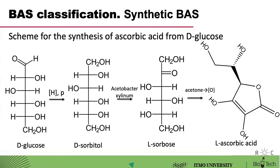Glucose is catalytically hydrogenated with pressurized hydrogen to give D-sorbitol. L-sorbose is obtained from the latter by biological oxidation by the action of Acetobacter xylinum. Treatment with acetone gives 2,3:4,6-diisopropylidene L-sorbose. Oxidation of these products in alkaline medium after hydrolysis yields ascorbic acid.